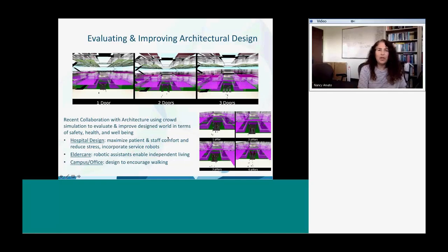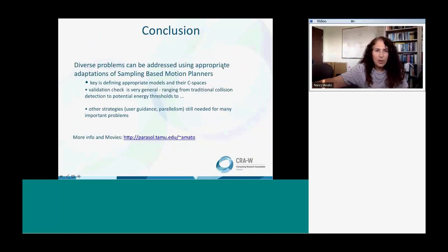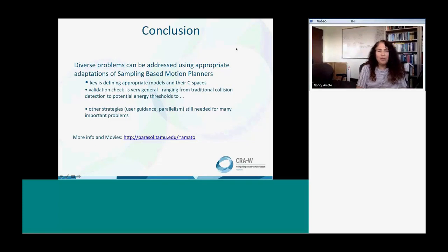These are multi-agent systems developed through collaboration with colleagues in the Department of Architecture. They're interested in using crowd simulations to evaluate various architectural designs. For example, they want to come up with a hospital design that maximizes patient and staff comfort and reduces stress — using routes that expose people to more natural light or encourage more walking for better health. This brings together motion planning with other disciplines. Hopefully you are a little bit amazed, as I still am after 20 years, at the range of diverse problems that can be addressed using appropriate adaptations of these sampling-based motion planners.